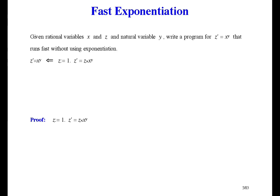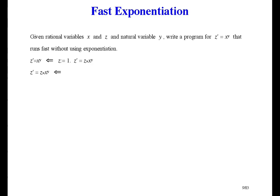Let's do this properly with proof. Use the substitution law and replace Z with 1 in the following expression. 1 is the identity for multiplication, and that's why we start at 1. Now we have to refine Z prime equals Z times X to the power Y. An easy way to do that is to test if Y equals 0.